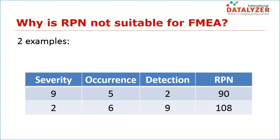The second example has a severity of 2, an occurrence of 6, and a detection rating of 9, resulting in an RPN number of 108. In the past, the higher RPN in the second example would have been prioritized as an action item over the RPN in the first example.